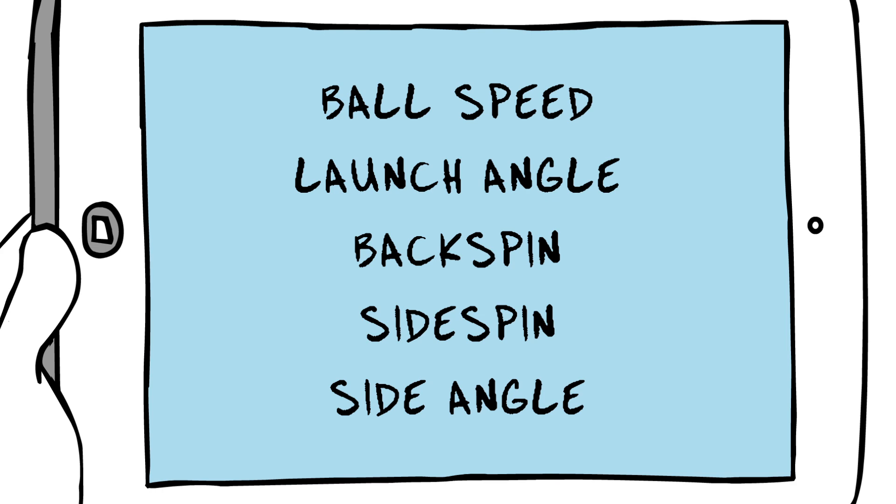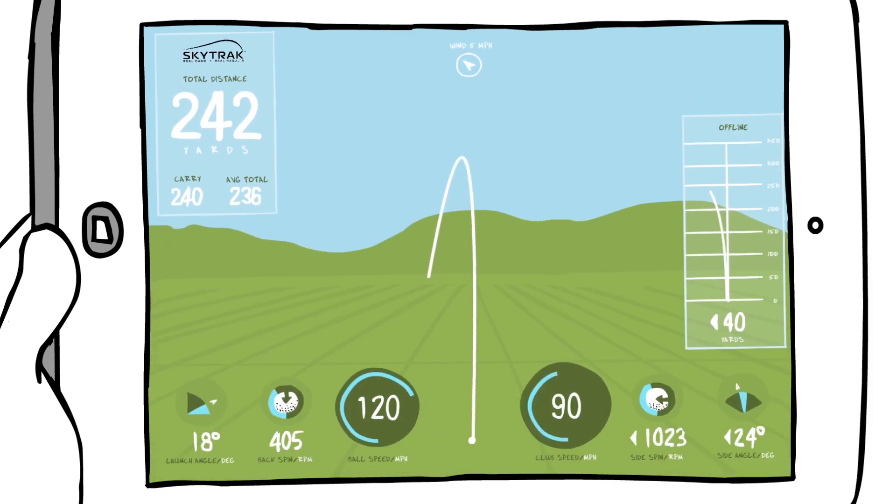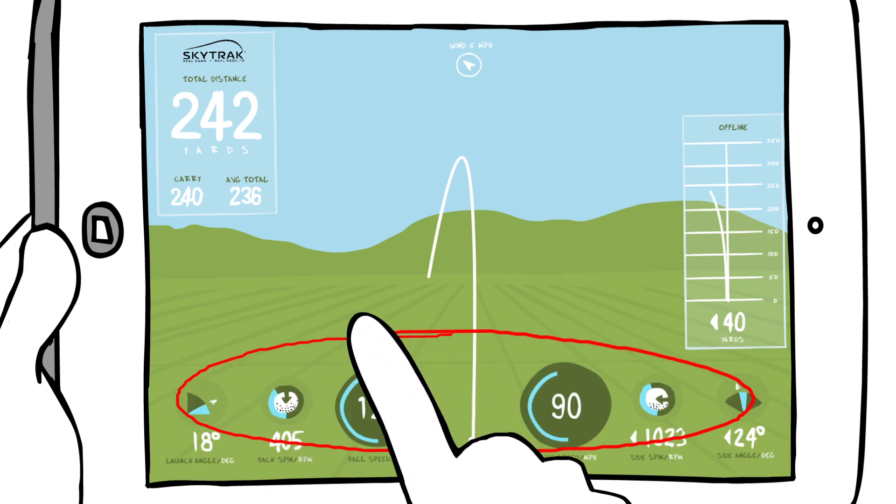By collecting this set of data, the physics of golf can be used to project the actual ball flight. This simple concept is the foundation of how SkyTrack works.